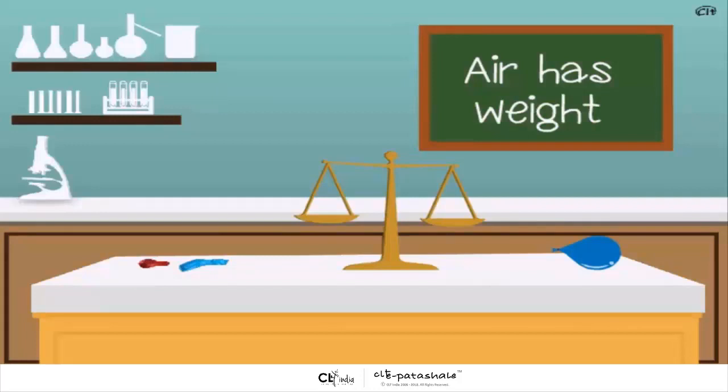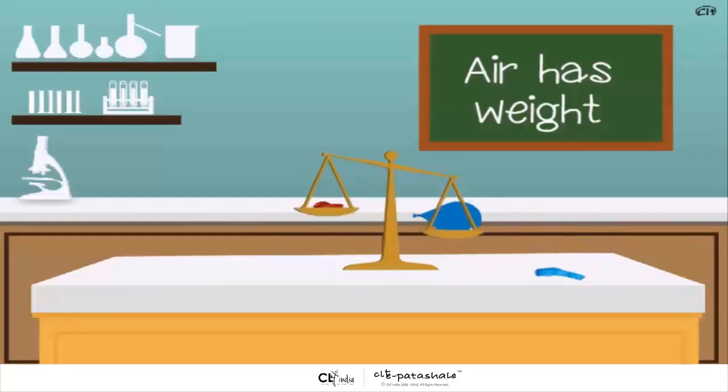Take two balloons and a balance which is calibrated. Place one empty balloon on each side of the balance. You can see that the weight of both the balloons are same. Now fill air in one balloon and place it in the balance. You can see that it has tilted slightly.